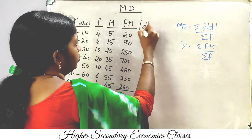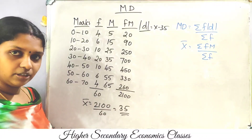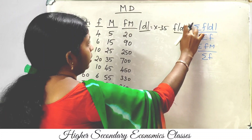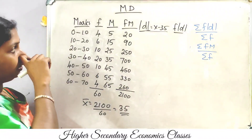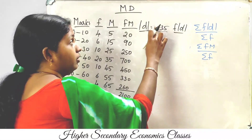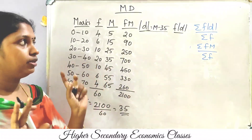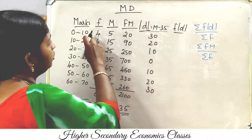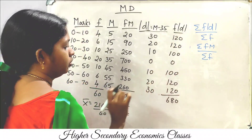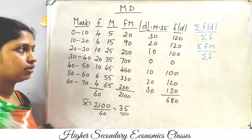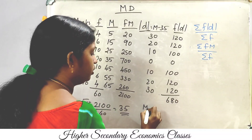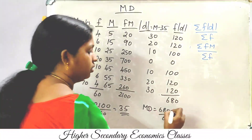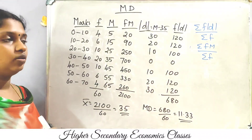Now we compute modulus d, which equals x minus 35 (the midpoint values minus the mean of 35). We then compute f modulus d for each row. The total sigma f modulus d equals 680. Mean deviation equals 680 divided by 60, which gives 11.33.